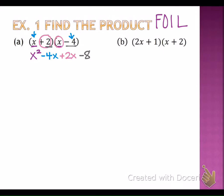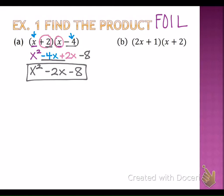Is this my final answer? No. The negative four x plus two x in the middle were like terms and I had to combine them, so the final answer is x squared minus 2x minus 8. Again, my binomials became a trinomial.